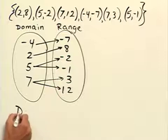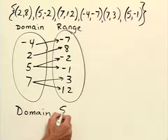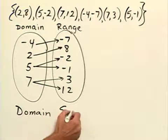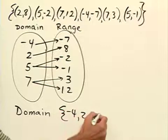Now the domain, again, is just the set of all x-coordinates. So the domain is negative 4, 2, 5, and 7.